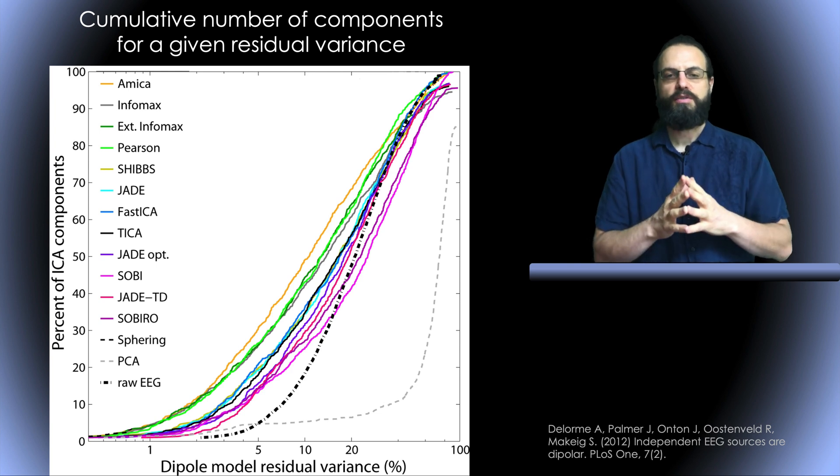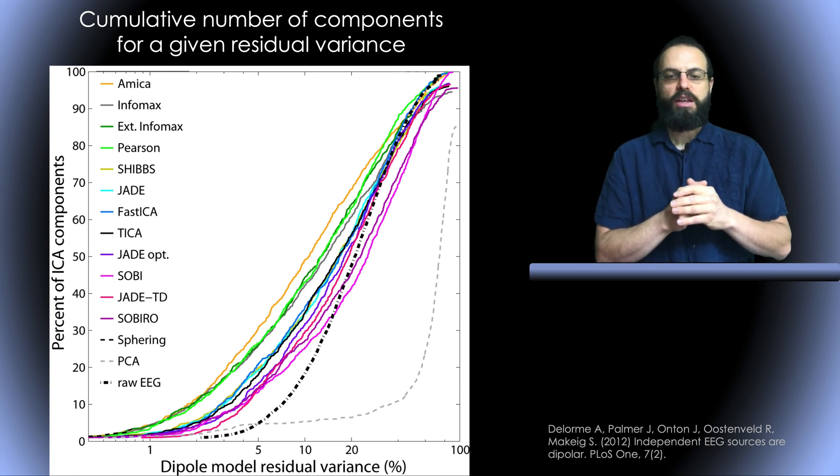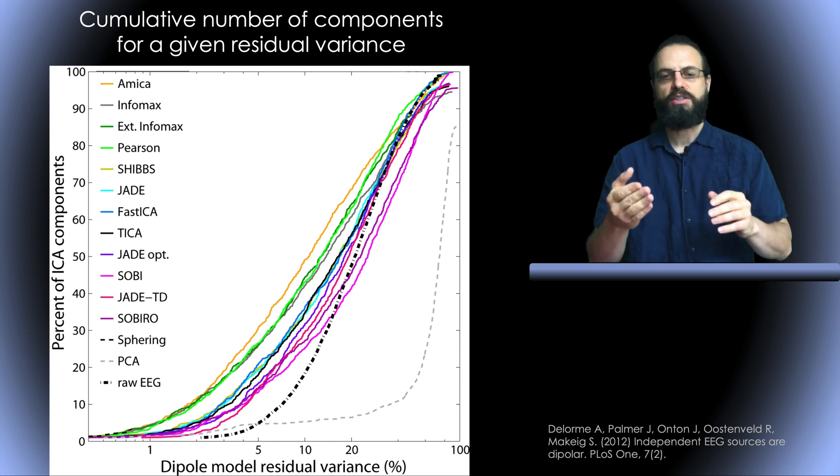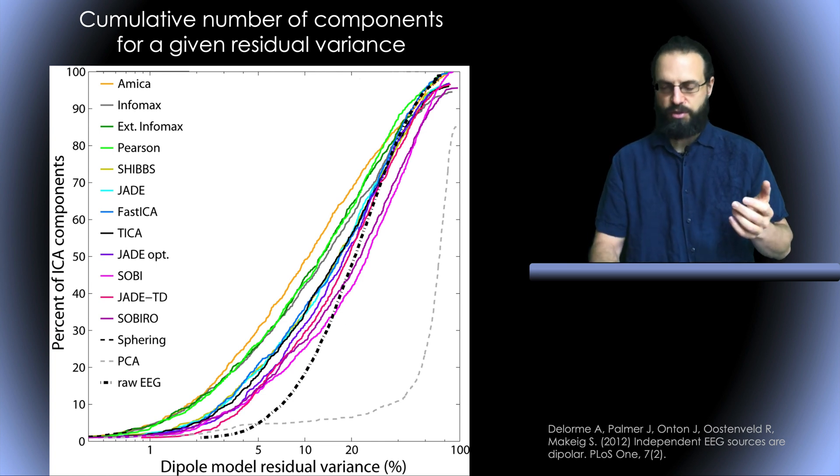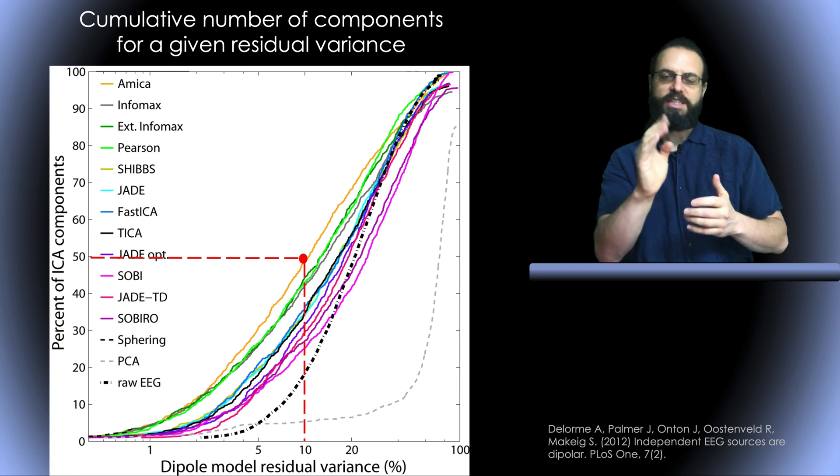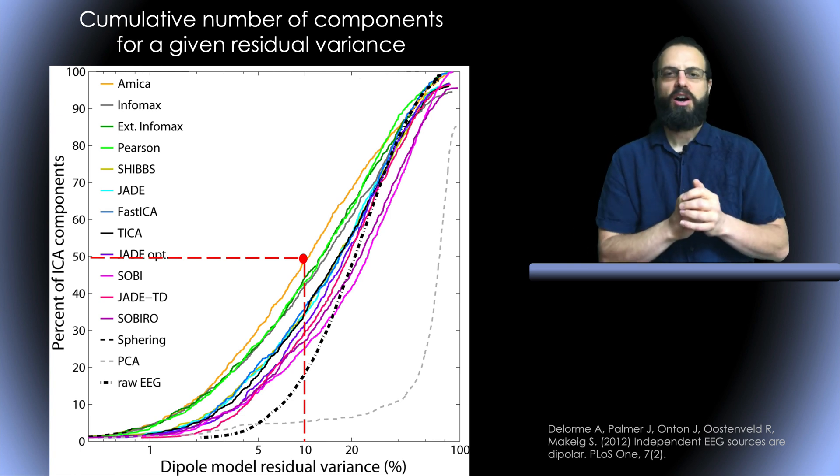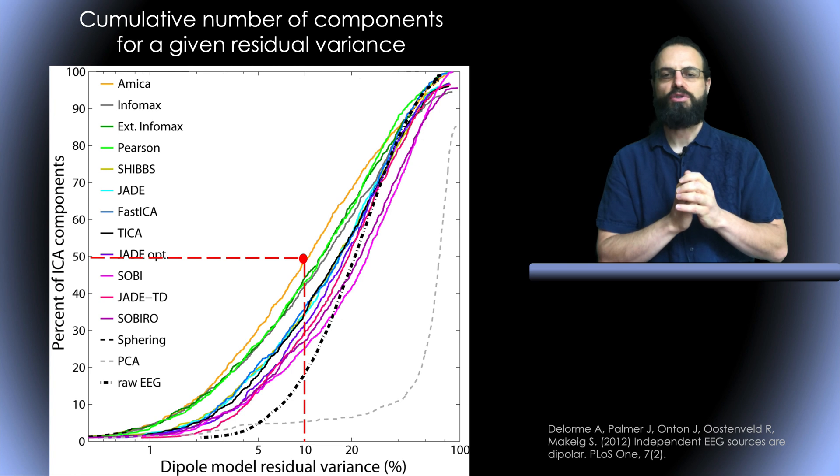This is one of the main results of the paper. Here we've plotted every single line—there's a different ICA algorithm. We plotted on one axis the dipole residual variance, and on the other axis the percentage of ICA components accumulated. For example, if we take this point here for the algorithm AMICA, it means that at 10% residual variance, I have 50% of my components. 50% of my components, across all the 13 subjects, have less than 10% residual variance.